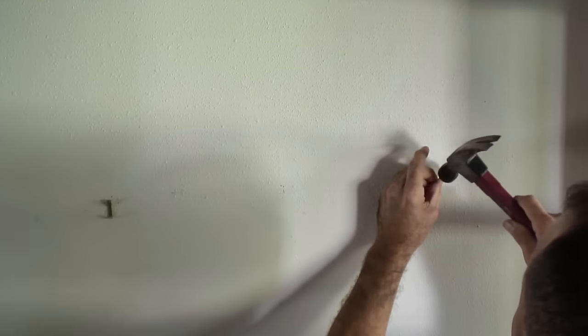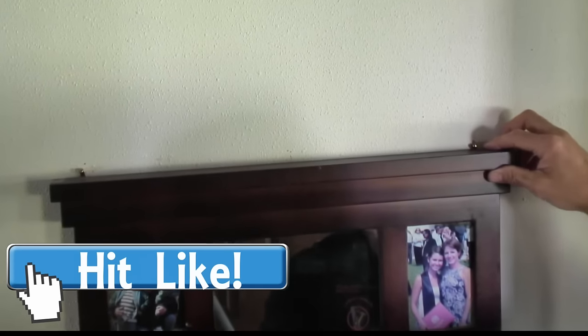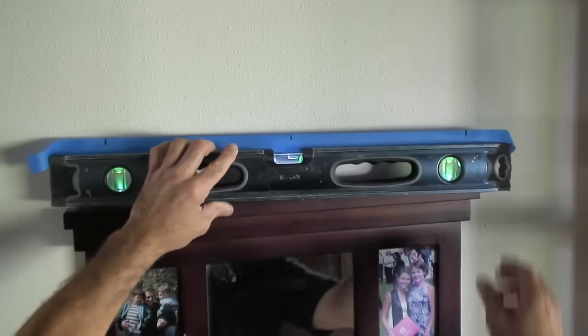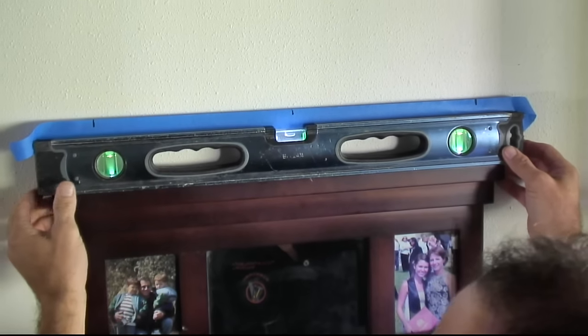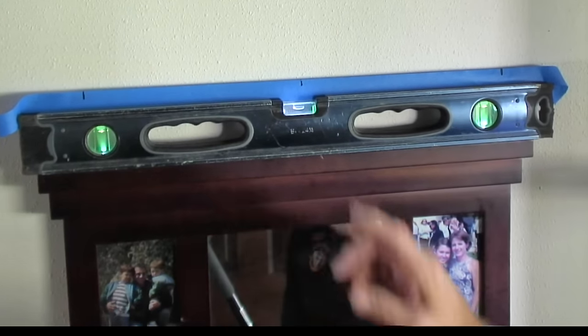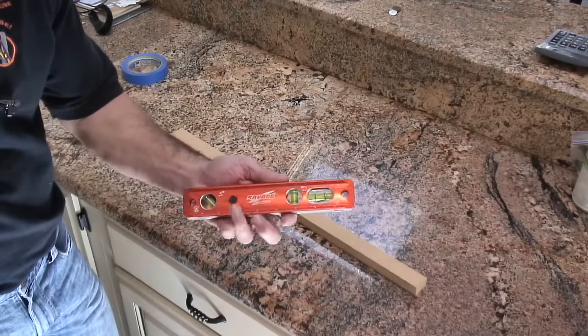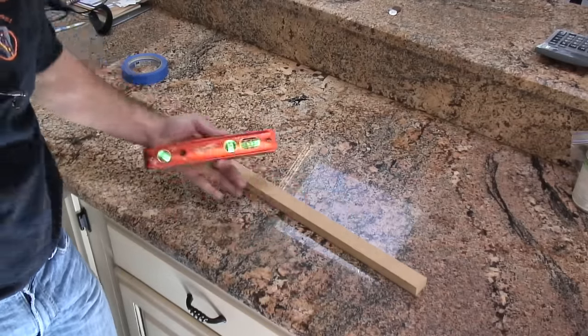We'll just line up our holes. We'll take our frame and just set it right in. Next, we'll double check ourselves, and we're on the money. If all you have is a torpedo level or a smaller level that won't run the span, just take it.